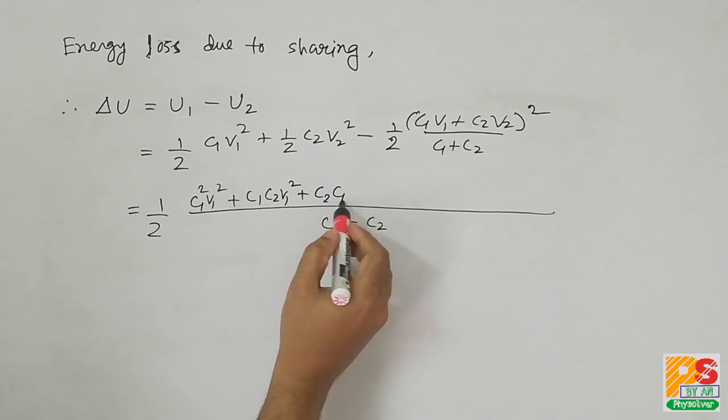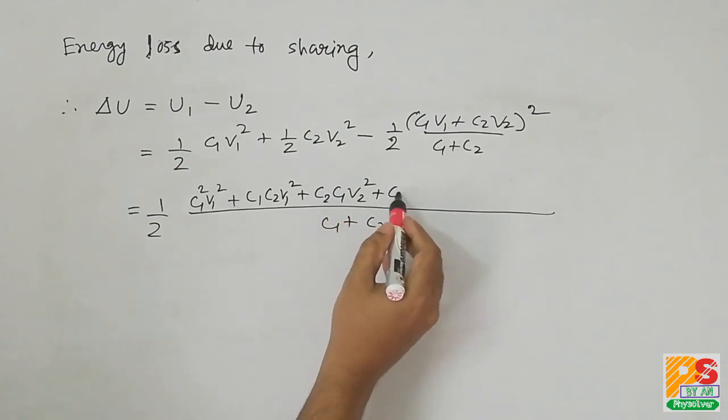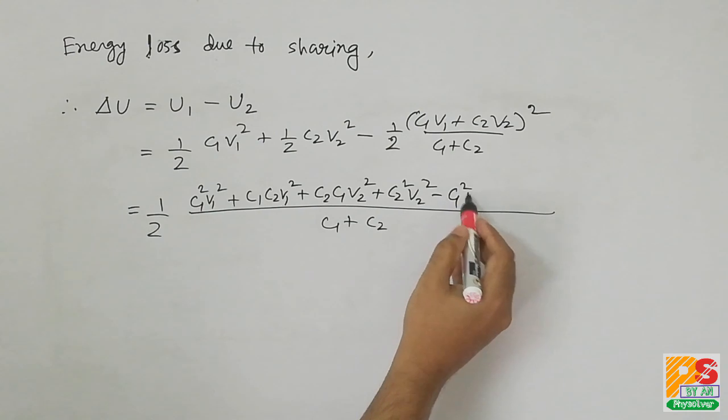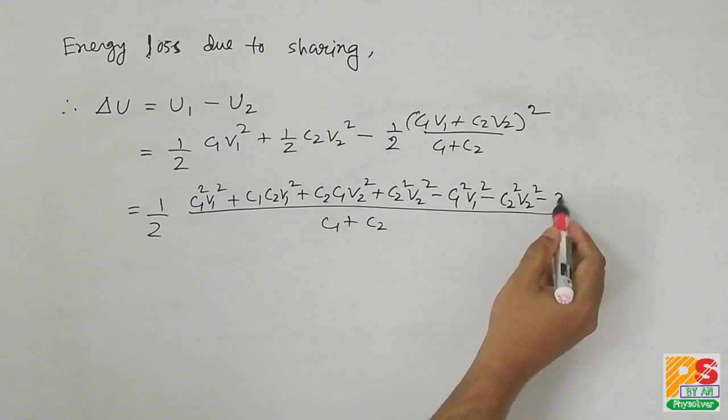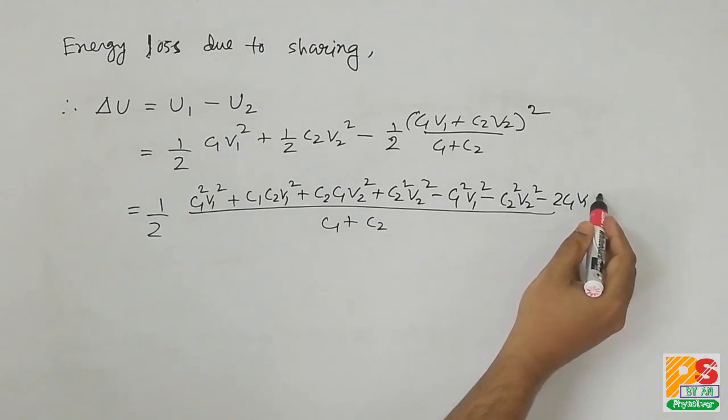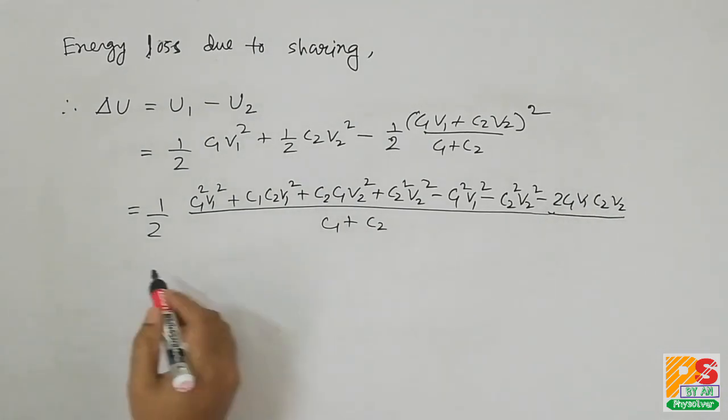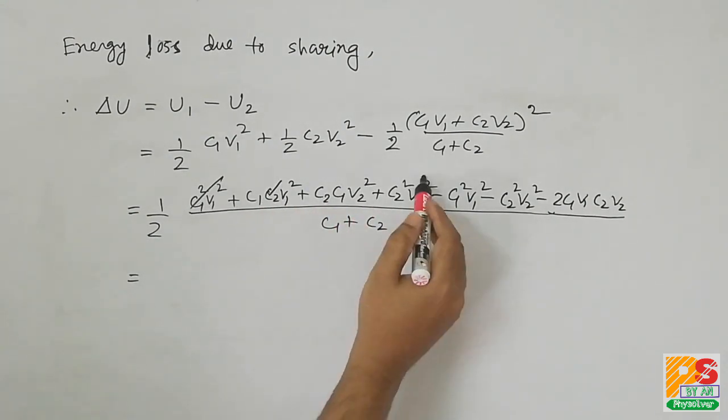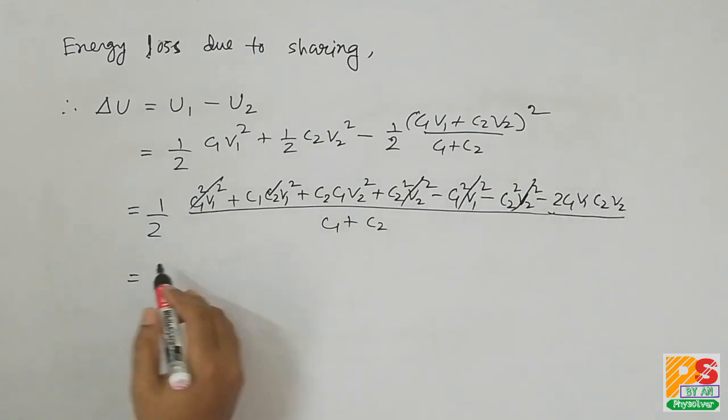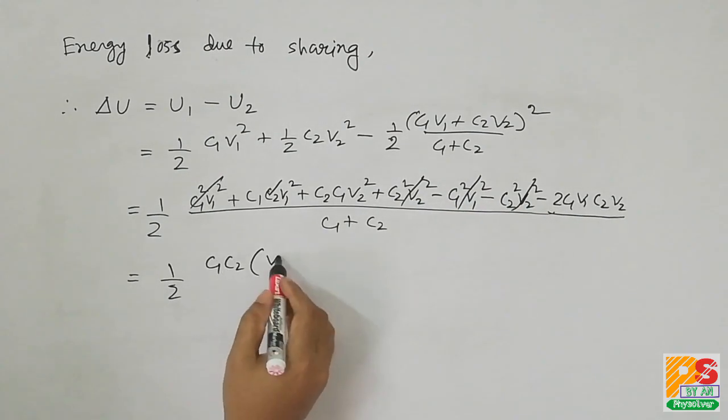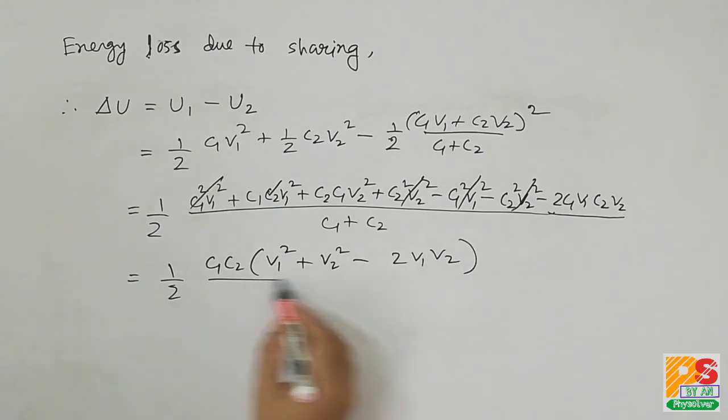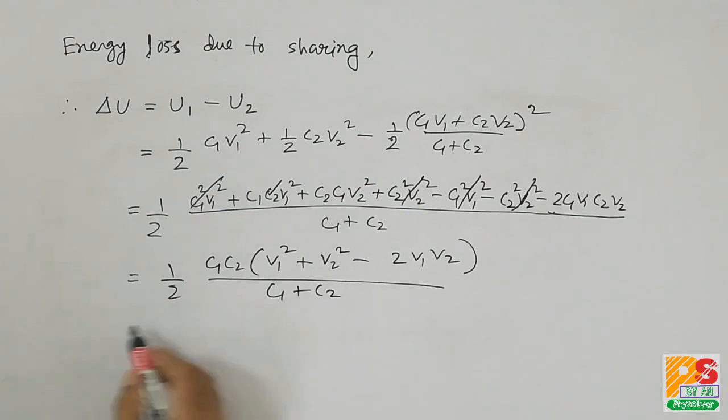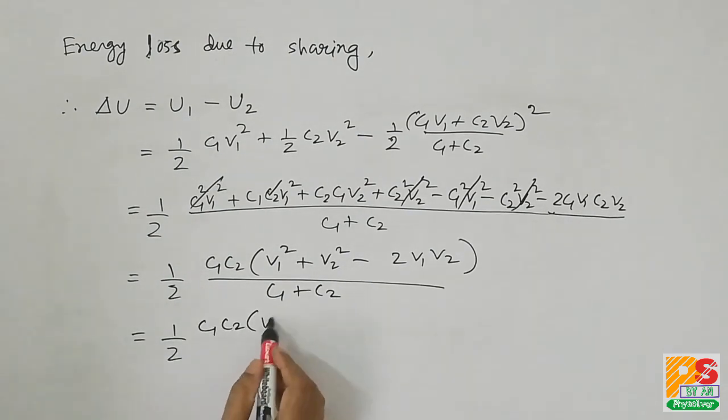C1 C2 will be the LCM. Look at the calculation very carefully. Here C1 V1 square and C2 V2 square will cancel out and we take C1 C2 common.